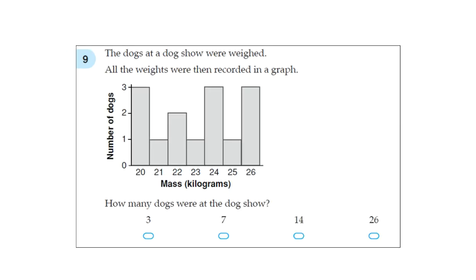Question 9. The dogs at a dog show are weighed. All the weights were then recorded in a graph. So number of dogs on the y-axis, mass in kilograms on the x-axis. All we need to do is figure out the number of dogs.